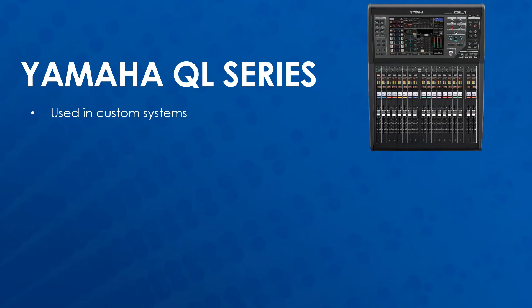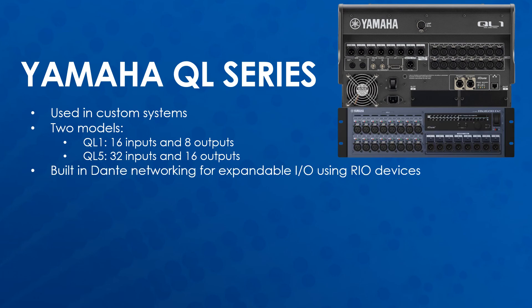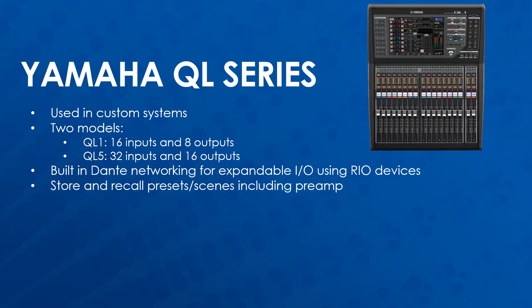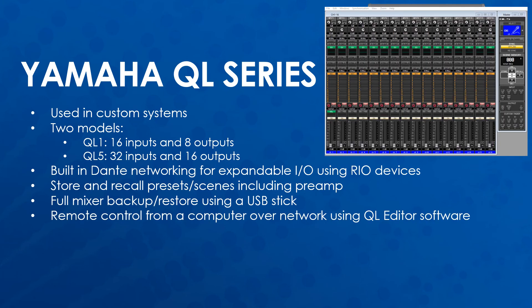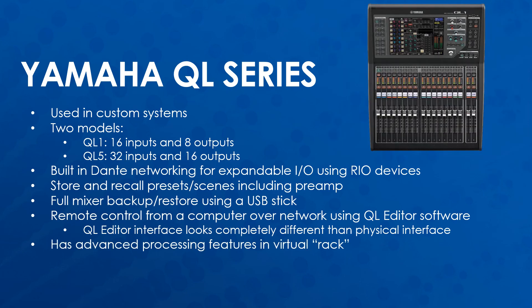The Yamaha QL series is used in custom systems. There are two models available: the QL1, which has 16 local inputs and 8 outputs, and the QL5, which has 32 local inputs and 16 outputs. The QL series has built-in Dante networking for expandable I/O using Yamaha Rio devices. These mixers can store and recall scenes that include preamp gain settings. Full mixer backup and restore can be done using a USB stick, and remote control from a computer over a network can be done using QL editor. Note that QL editor's interface looks completely different than the physical interface on site, which can make supporting this mixer somewhat difficult. It is recommended to pull up the mixer manual for troubleshooting. The QL series also has built-in virtual processing gear that channels can be routed through for additional processing, most often used at Daktronics to reduce the chance of feedback.